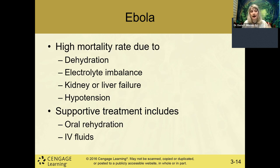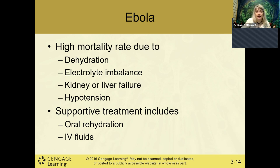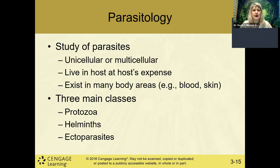The high mortality is due to dehydration, electrolyte imbalance, kidney failure, liver failure, multi-system failure, hypotension, and then cardiac arrest. Treatment involves antibody/immunoglobulin therapy, oral rehydration, and most importantly IV fluids to prevent severe dehydration and electrolyte imbalance. Keep IV open and administer fluids as needed.